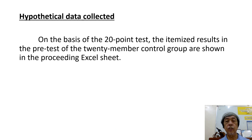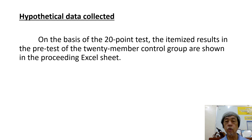On the basis of the 20-point test, the itemized results in the pre-test of the 20-member control group are shown in the preceding Excel sheet.